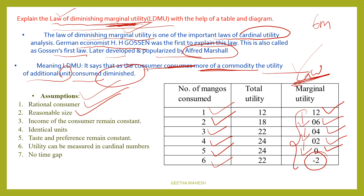For example, a cup of coffee. If you consume a cup of coffee, the utility must be measured per cup. The income of the consumer remains constant.